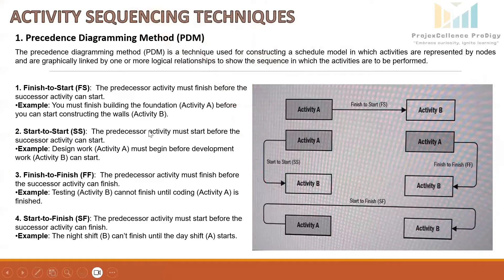The Precedence Diagramming Method is a technique used for constructing a schedule model in which activities are represented by nodes and are graphically linked by one or more logical relationships to show the sequence in which the activities are performed. It is also called the AON technique — Activity on Nodes. In PDM, there are four types of dependencies or logical relationships between activities.